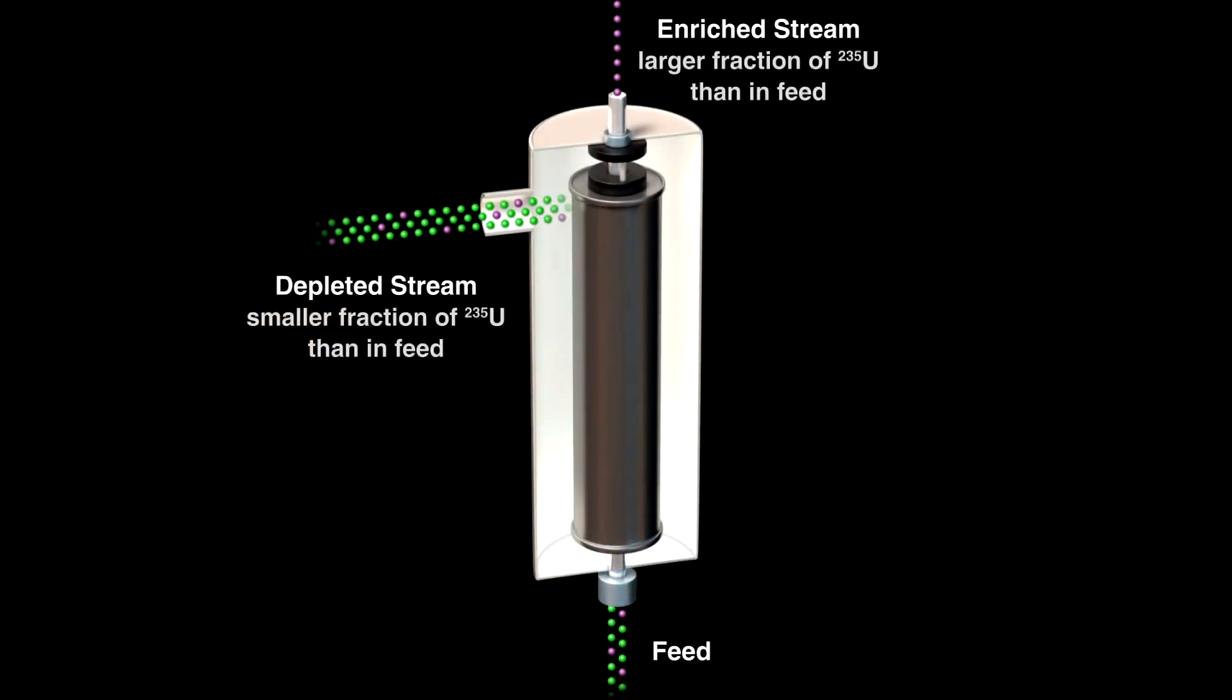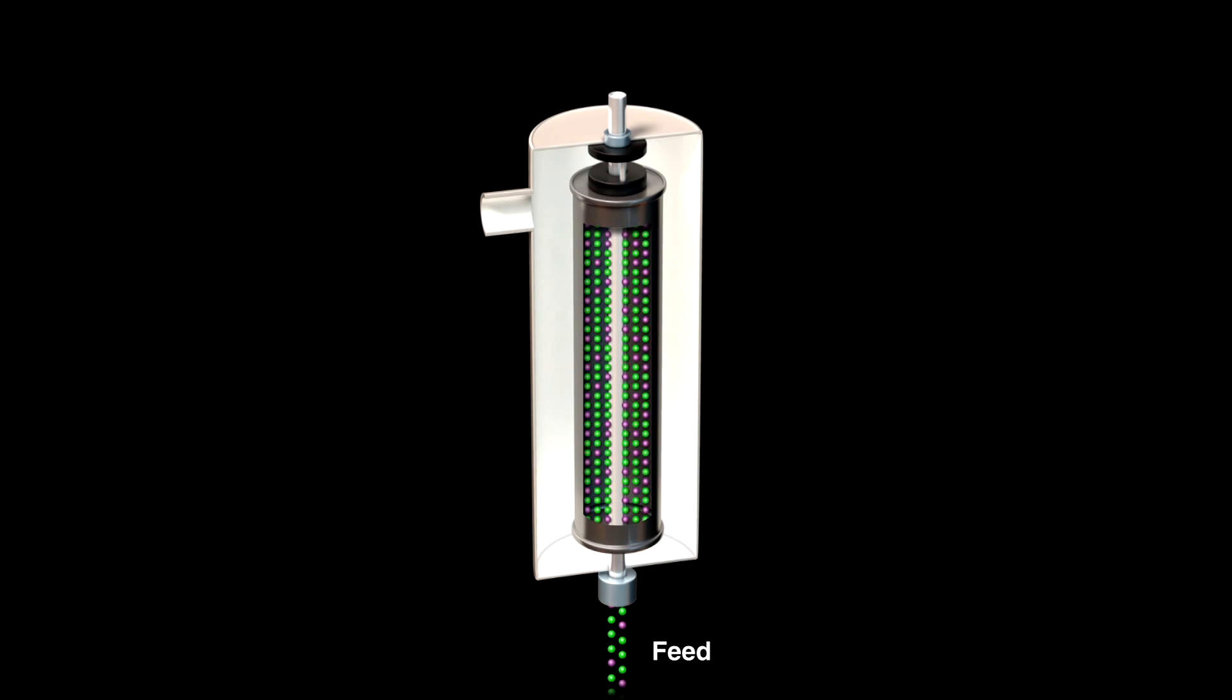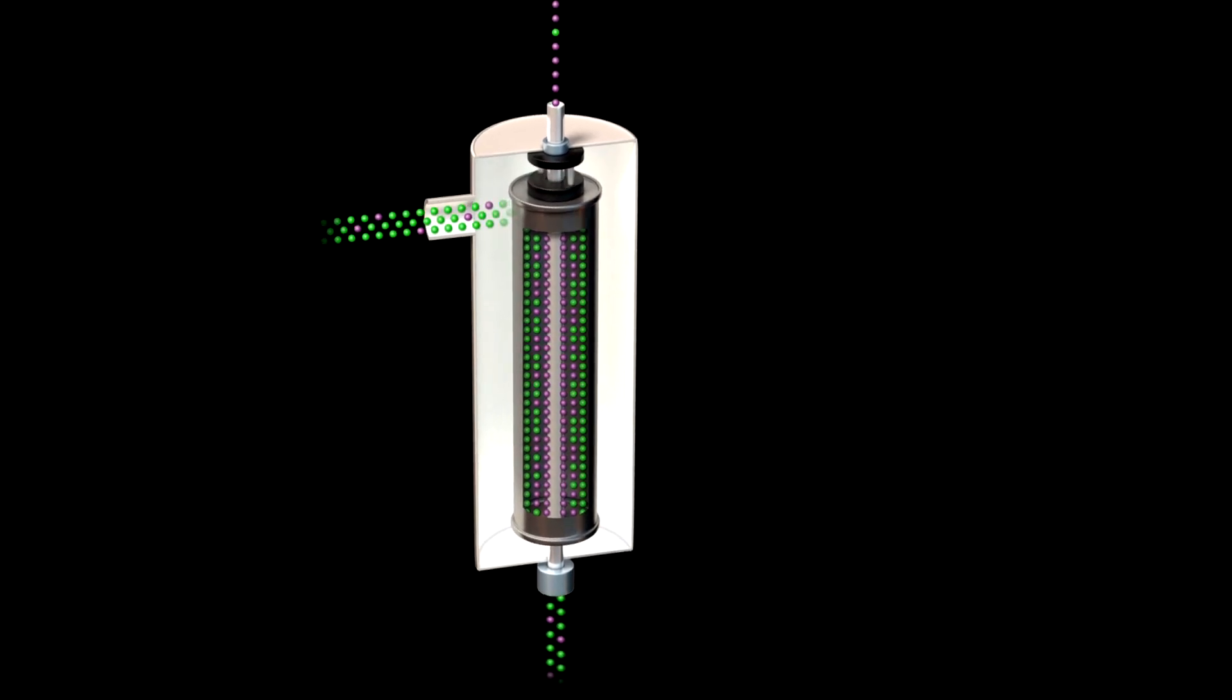Another method of separation exploits the small mass difference by using a centrifuge. A typical device consists of a stationary outer cylinder and an inner rotor that spins. A gaseous mixture of the two isotopes flows up a tube along the central axis, filling the rotor. As it spins rapidly, more of the U-238 is thrown out to the edge than the lighter U-235, which stays closer to the middle. The enriched stream can be removed from the rotor and sent to another centrifuge to be separated even more.